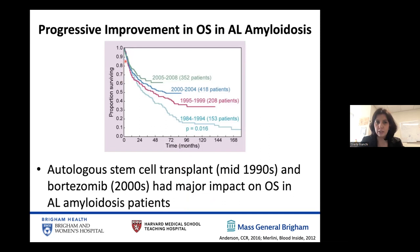Autologous stem cell transplantation with careful patient selection and the use of proteasome inhibitors, pioneered in the early 2000s, have been the therapeutic approaches with the major impact on improving overall survival. Unfortunately, about 20 to 30% of patients with AL amyloidosis still do not survive past the first 12 months from diagnosis, and most of these early deaths are related to advanced cardiac disease.